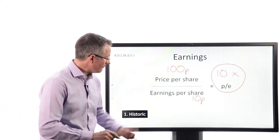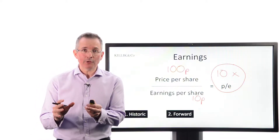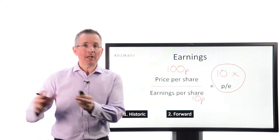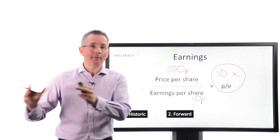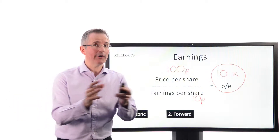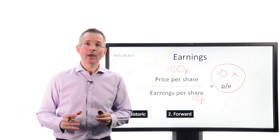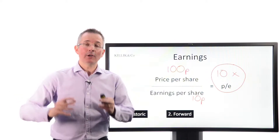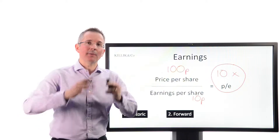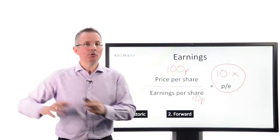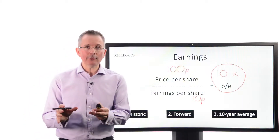Historic PE ratios look backwards and take the last 12 months' earnings figure compared to the current share price. Forward PE multiples, which are quite common, will typically look one year ahead and try to forecast earnings — on the basis that buying shares is all about looking to the future: what a company might be worth and be able to generate, not the past.